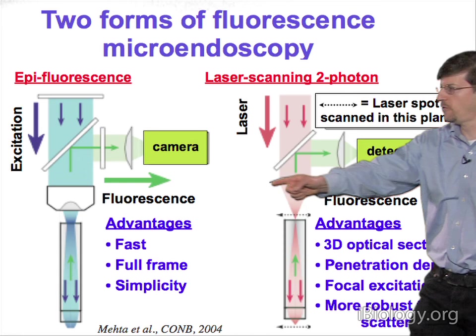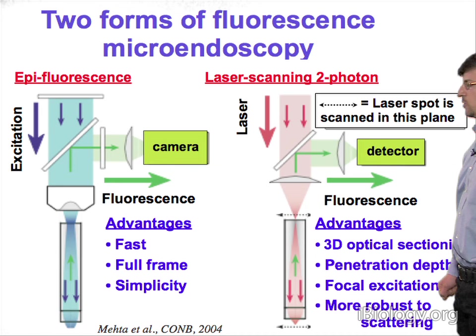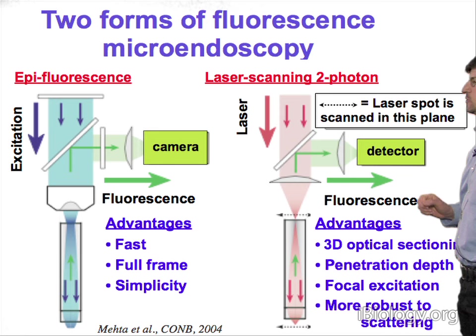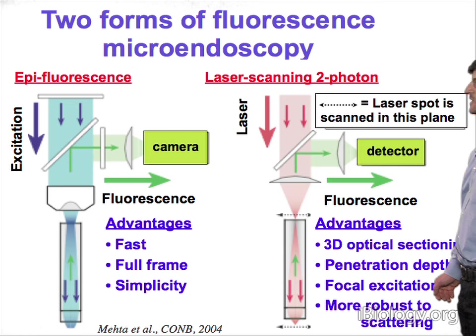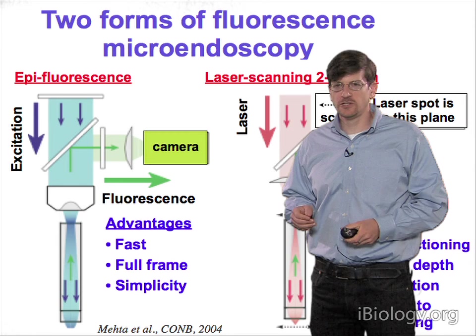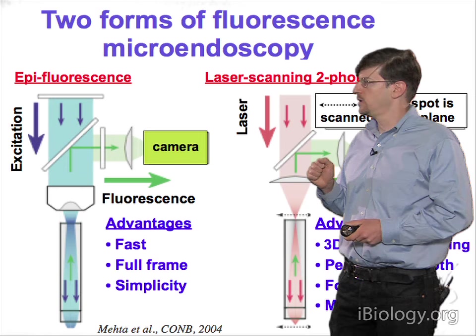The main virtues of this approach are true three-dimensional optical sectioning and superior penetration depth compared to the one-photon modality. We have a two-pronged means of going deep: we insert the micro-optical probe into the tissue location of interest, then additionally acquire image stacks extending about 650 microns in depth as measured from the probe face. Like other nonlinear optical imaging modalities, two-photon microendoscopy achieves focal excitation and is more robust to light scattering compared to conventional epifluorescence imaging. In summary, we have two complementary modalities: a simple but very fast one and a slower one providing three-dimensional image stacks.